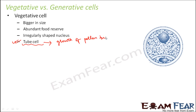Now you might ask what is this pollen tube. The pollen tube is the tube which helps in gamete transfer — it helps carry the pollen grains and helps them reach the female gamete. Without this tube, fertilization will not be able to take place. So this tube cell helps in the growth of the pollen tube, while the other cell takes care of the formation of male gametes.